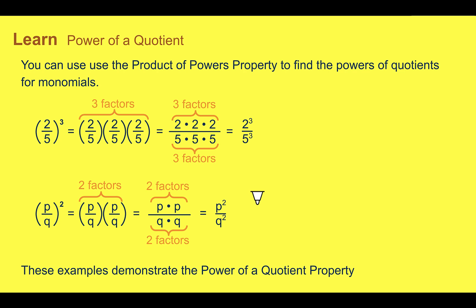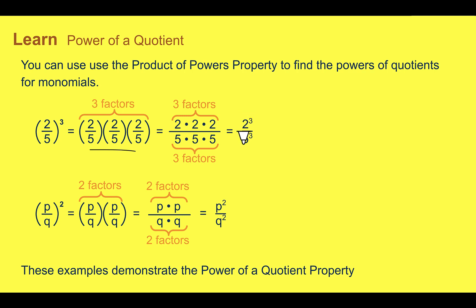Let's learn power of a quotient. You can use the product of powers property to find the power of quotients for monomials. For example, if we have 2 fifths to the 3rd power, that means we have 2 fifths 3 times. Then we can see there are 3 twos on the top and 3 fives on the bottom, so this is the same as 2 to the 3rd over 5 to the 3rd. We can just take the power that's outside and distribute it to everything on the top and the bottom.